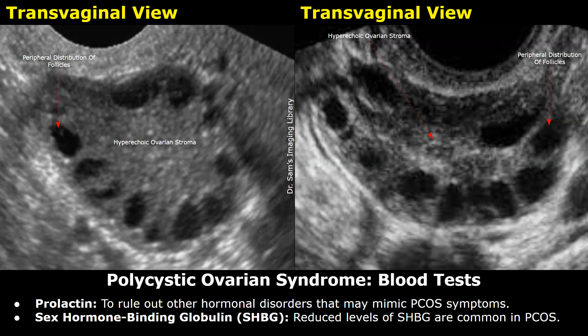Sex hormone binding globulin (SHBG) is the protein produced by the liver that binds to sex hormones, including testosterone and estrogen, in the bloodstream. In PCOS, there can be alterations in SHBG levels. Usually their levels are lower in women with PCOS, which can contribute to higher levels of free testosterone.